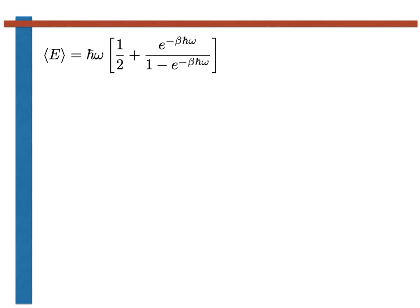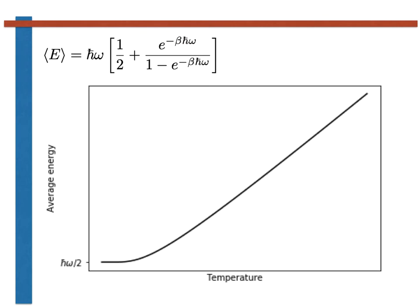It is useful to plot the expression for the average energy that we have just derived in order to understand this result better. A plot of this function is thus shown below. You can see that when the temperature is large the average energy increases linearly as we saw in the classical case. There is a deviation from this linear increase at low temperatures though.